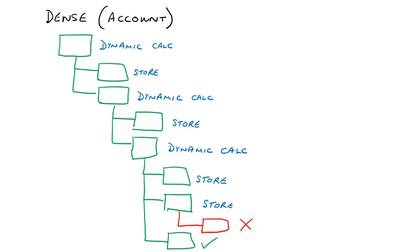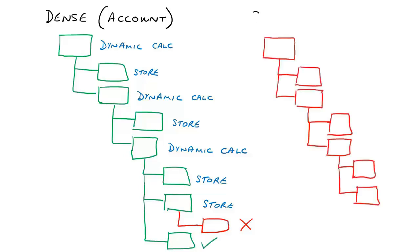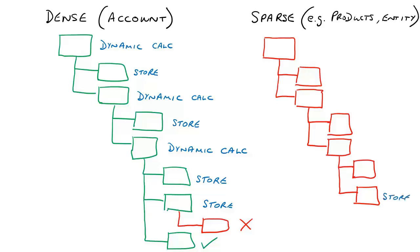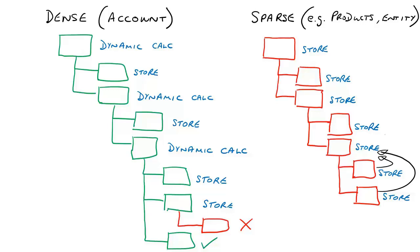All the other dimensions in FCCS, such as products and entities, are sparse dimensions. The members of sparse dimensions are generally stored members, although members can be dynamically calculated if member formulas are being used. As a result, any aggregation — again governed by unary operators — needs to be triggered by business rules.